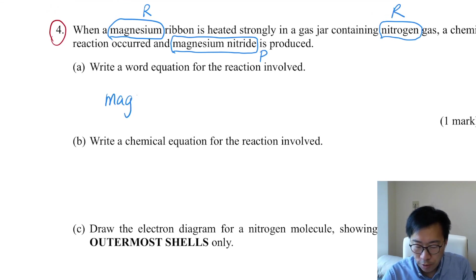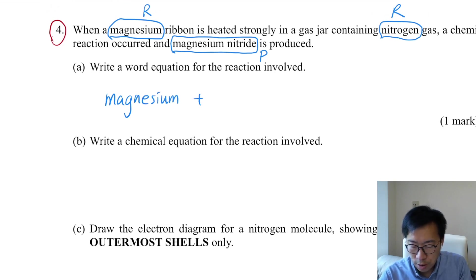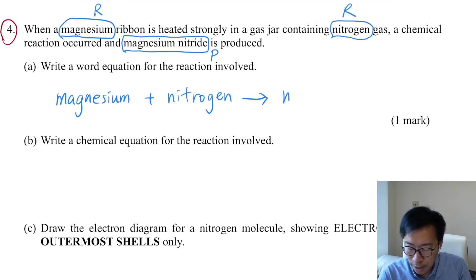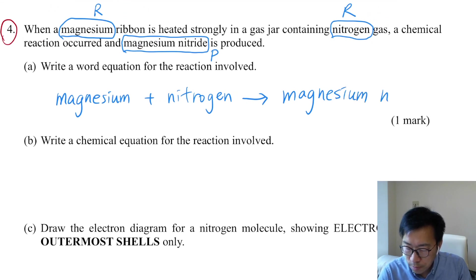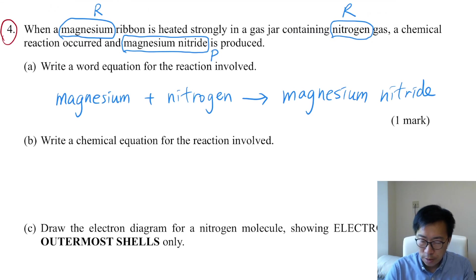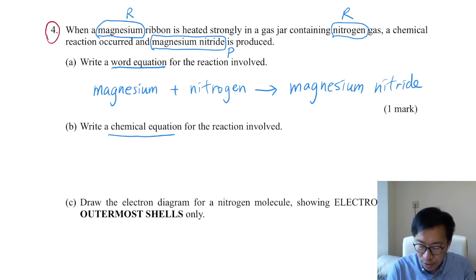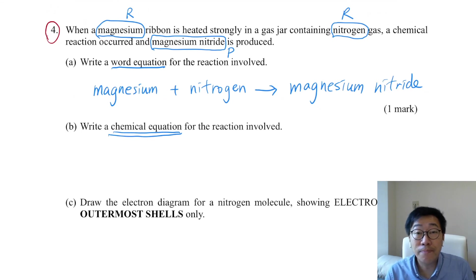So you write the word equation: magnesium plus nitrogen to give the product magnesium nitride. This is already part A, because you are asked to write the word equation. Part B asks you to write a balanced chemical equation.